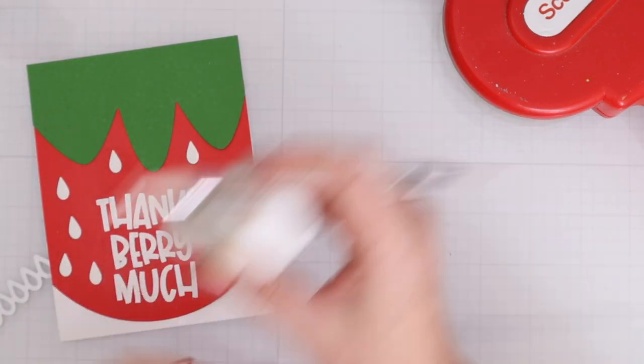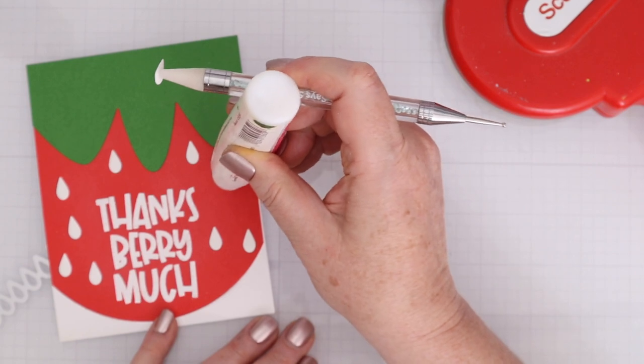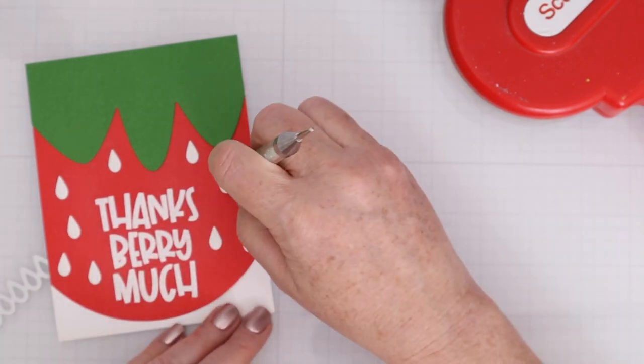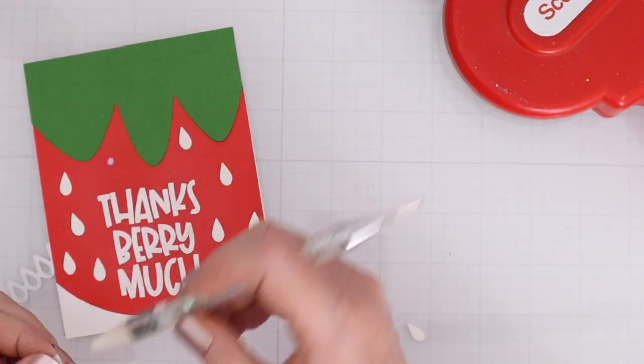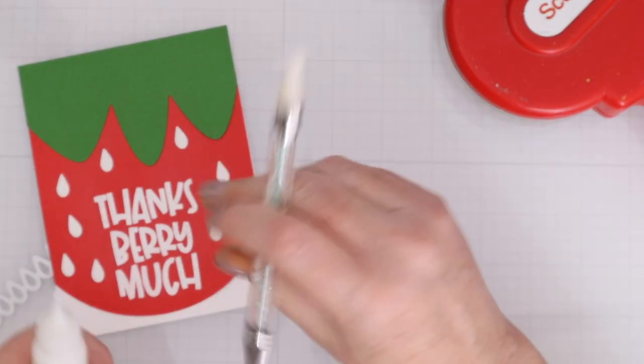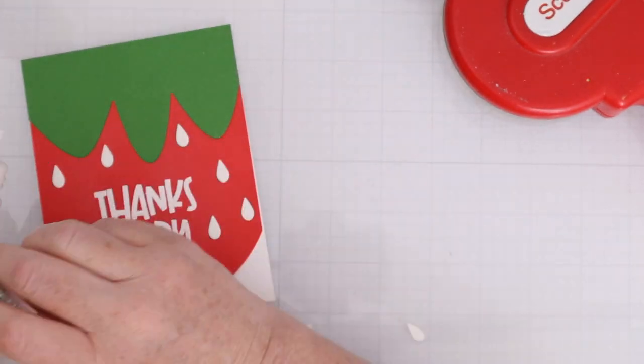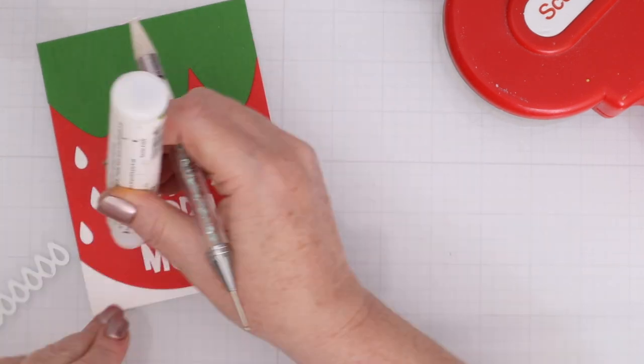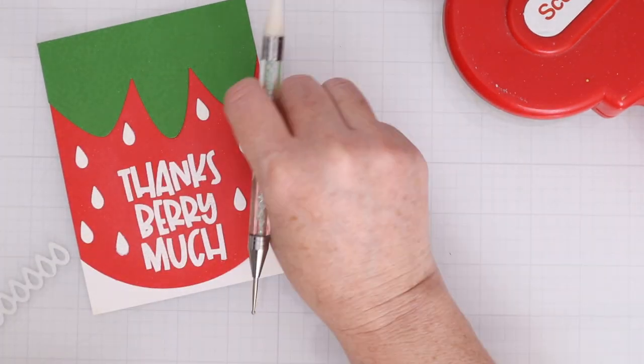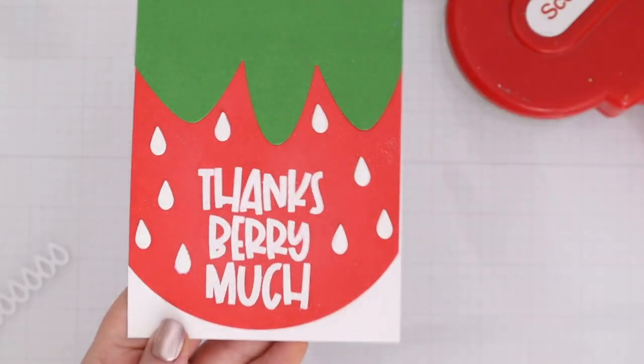There's a die that has many seeds connected to one so you don't have to save a teeny tiny little die and cut it out a million times which I think is brilliant. I love when Waffle Flower thinks of things like this because I lose teeny tiny dies all the time so I used that teeny tiny die to create strawberry seeds and then adhered them down with some liquid adhesive.